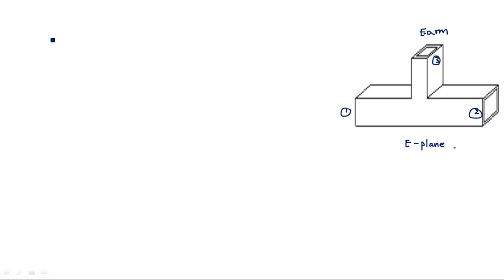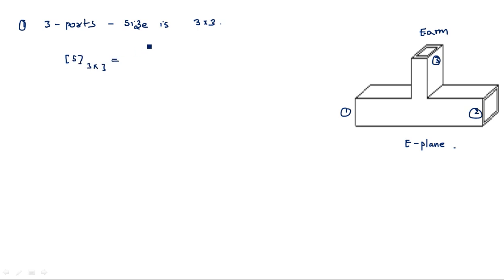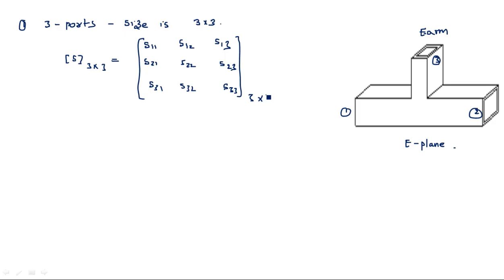Now first we need to observe how many ports it has — three ports. So what is the size of the S-matrix? The S-matrix size is three by three. Depending upon the number of ports, the S-matrix is written. S = [S11 S12 S13; S21 S22 S23; S31 S32 S33]. This is the scattering matrix size for the E-plane T-junction.